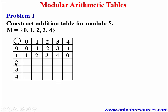We go to the row of 2: 2 plus 0 gives 2, 2 plus 1 gives 3, 2 plus 2 gives 4. Then 2 plus 3 gives 5, and 5 minus 5 is 0, so we have 0. And 2 plus 4 gives 6, and 6 minus 5 gives 1.